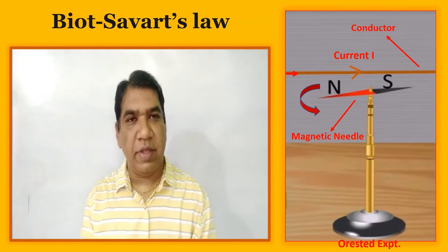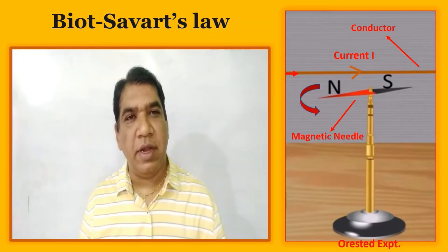In 1820, great scientist S. Oersted observed that a magnetic needle gets deflected when placed near a conductor carrying current.